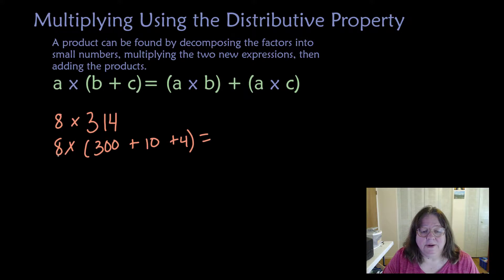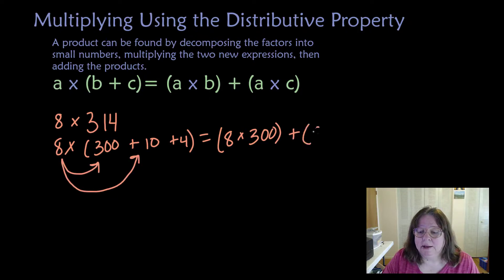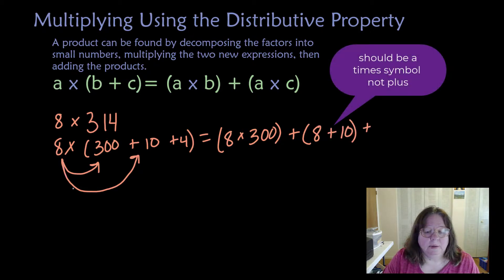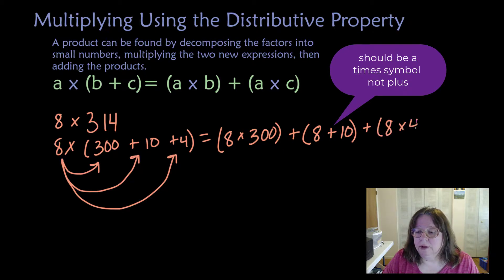So 8 times 300 plus 8 times 10 plus 8 times 4. 8 times 300. Well, 8 times 3 is 24. This is 8 times 300, so we get those 0s. 8 times 10 is 80. 8 times 4 is 32.